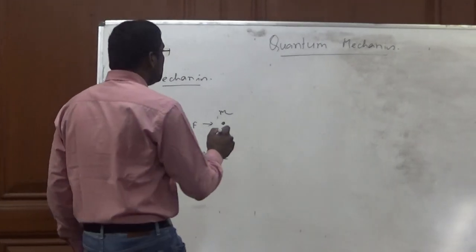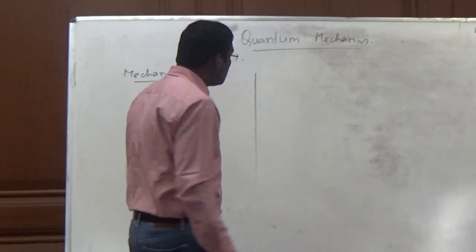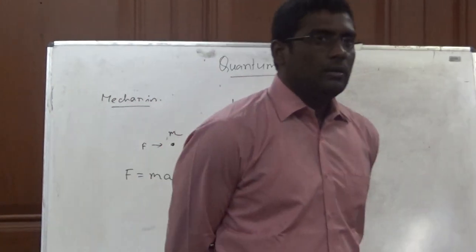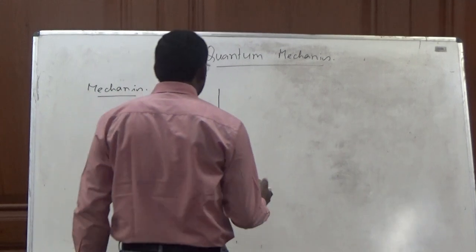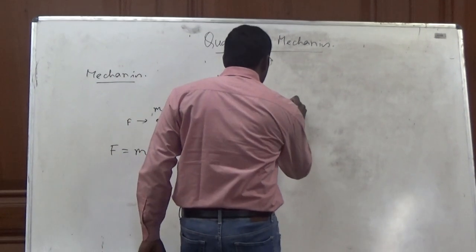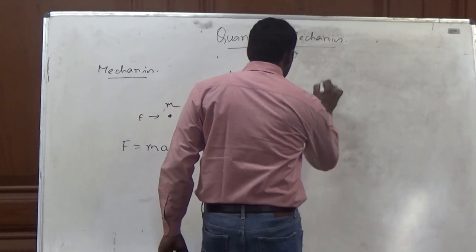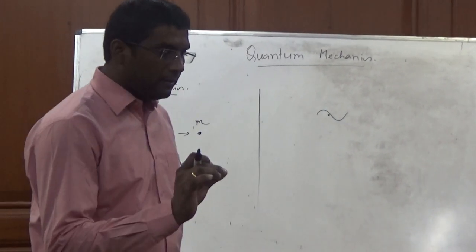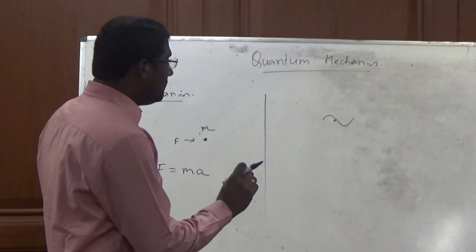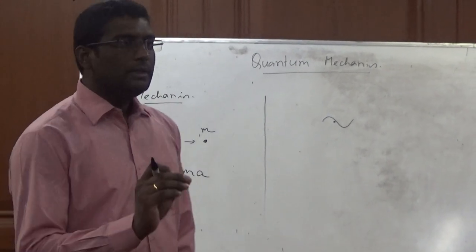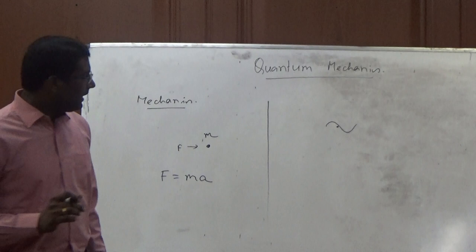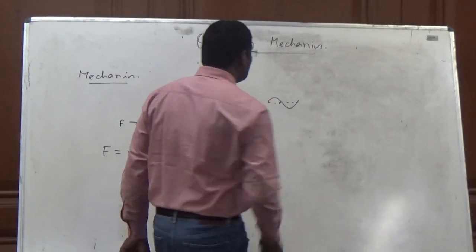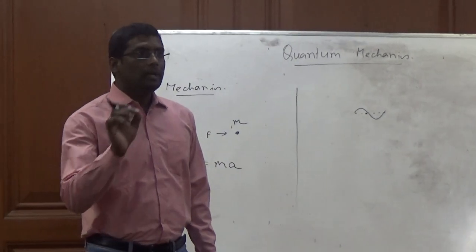But when we go to the subatomic level — when we go to the electron, proton — the moving particle is associated with a wave. At the subatomic level, the dimension of the wave is comparable to the dimension of the object. So in that case, it becomes difficult to know the exact position of the particle.